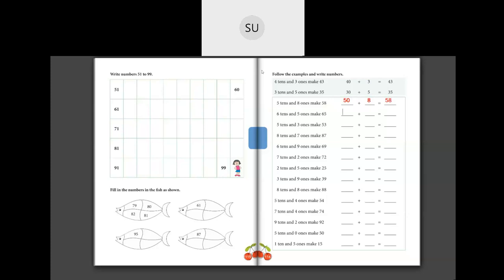Then we have 6 tens plus 5 ones. 6 tens is 60 and 5 ones is 5. So 60 plus 5 is 65. Then 5 tens and 3 ones make 53: we write 5 tens as 50 and 3 ones as just 3. So 50 plus 3 is 53.